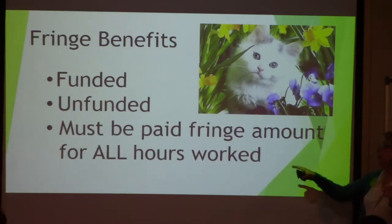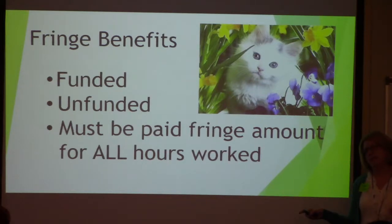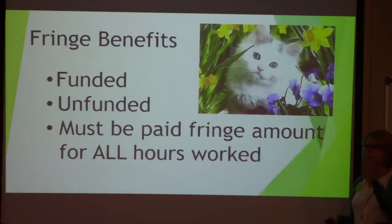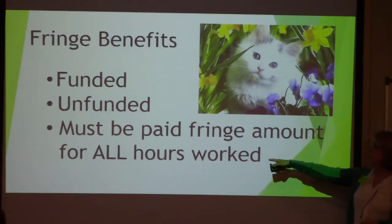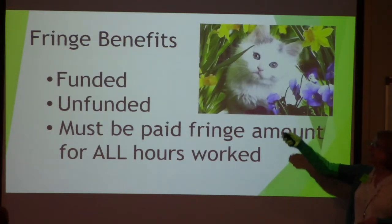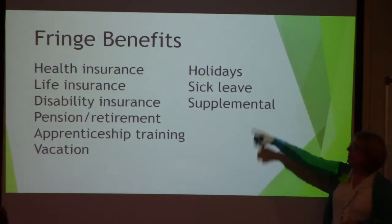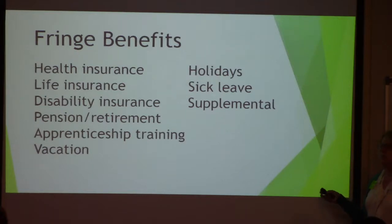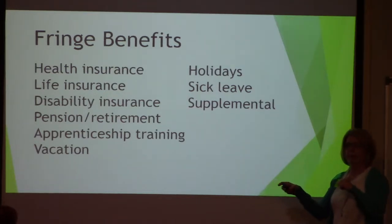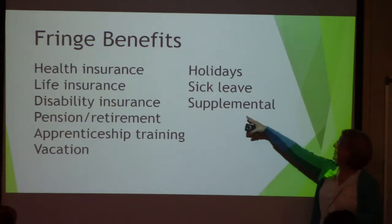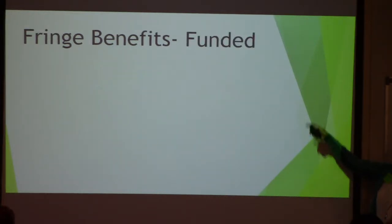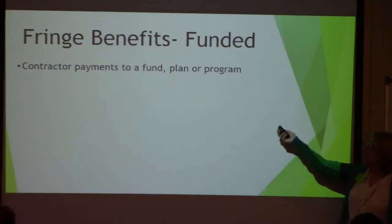Fringe benefits must be paid for all hours worked. Our calculations are based on 2,080 hours per year, and we've got to make sure that when someone works above that, they're still receiving that fringe benefit. Funded fringe benefits include health insurance, life insurance, disability insurance, pension, and 401(k). Those are funded — payments go to a third party. Unfunded benefits include holidays, sick leave, supplemental pay, and vacation — those are paid directly by the contractor as the benefit is earned.